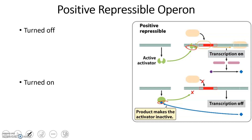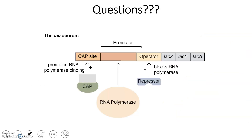To summarize: positive requires an activator, negative requires a repressor. Repressible means normally on but you can turn it off. Inducible means normally off but you can turn it on. If you remember those things, you should be able to think through any problem asking you about these operon types.